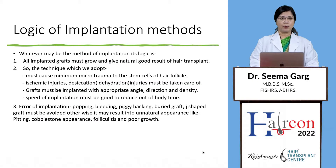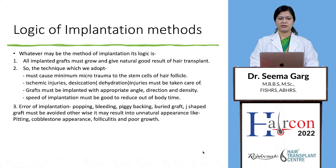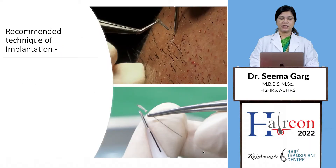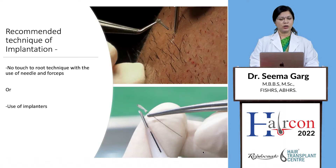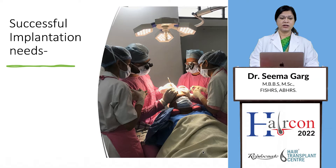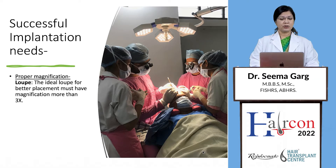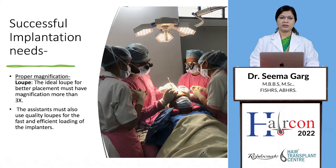Errors of implantation such as popping, bleeding, piggybacking, buried grafts, and j-shaped grafts must be avoided, as they may result in unnatural appearance. The recommended technique is either the no-touch-to-root technique with needle and forceps, or the use of implanters. Successful implantation requires proper magnification — loops must be used, and the ideal loop for better placement should have magnification greater than 3x. The assistant must also use good quality loops and LED lights.